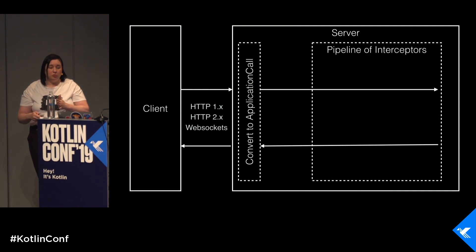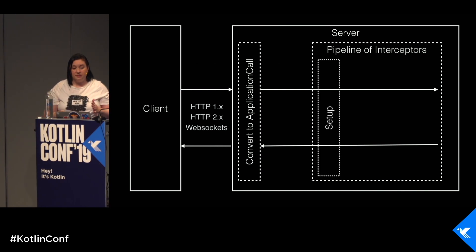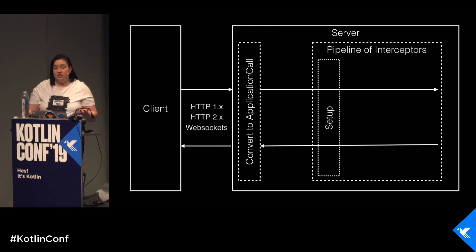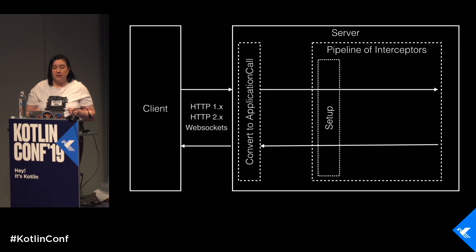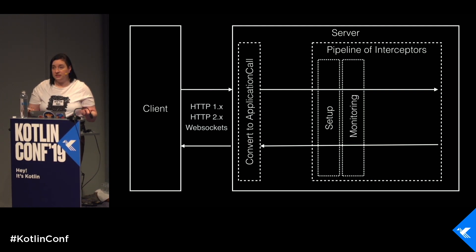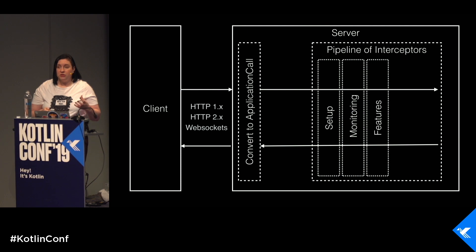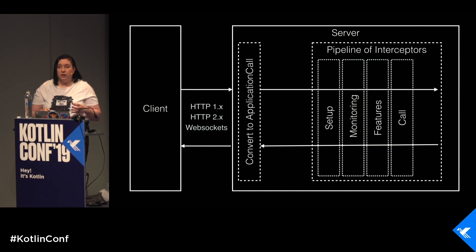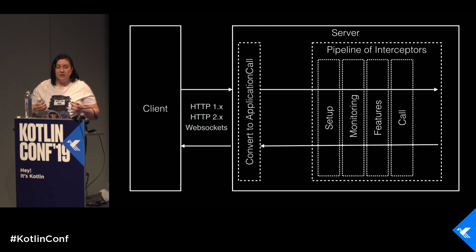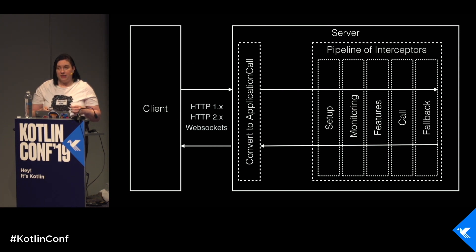The normal interceptor pipeline has a setup phase for preparing the call and its attributes for processing, a monitoring phase for tracing, a features phase where most features intercept the pipeline, a calls phase for completing where most interceptors that complete the call will run, and a fallback phase for handling unhandled calls.